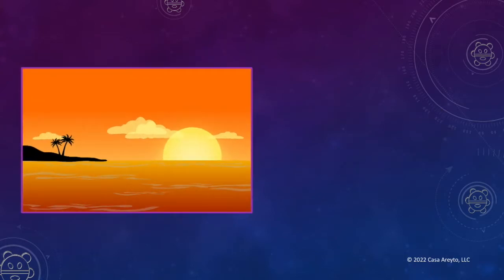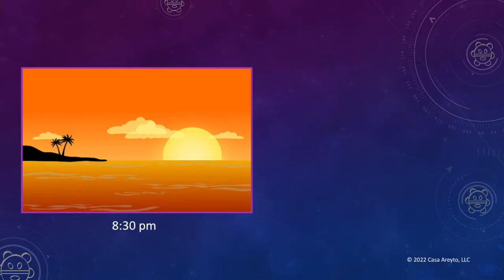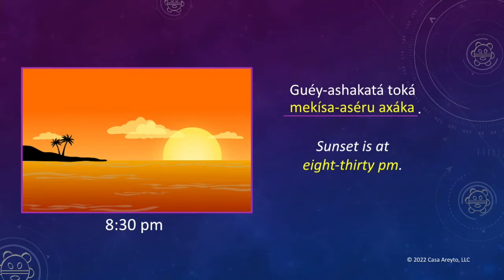Let's see the next question: Bena guayaxacata — when is sunset? Let's see. The picture tells me 8:30 p.m. Do you remember how to say that in Taino? Of course. Now let's read the whole sentence together. Sunset is at 8:30 p.m.